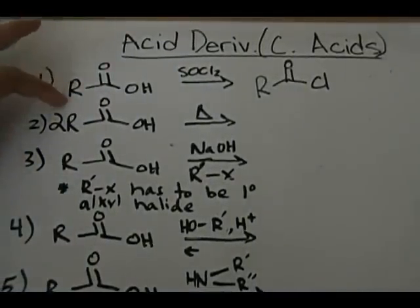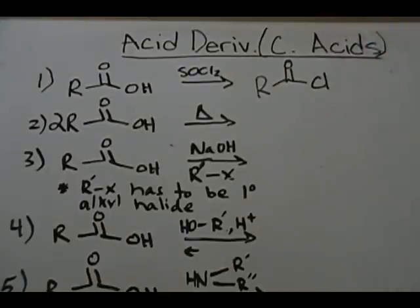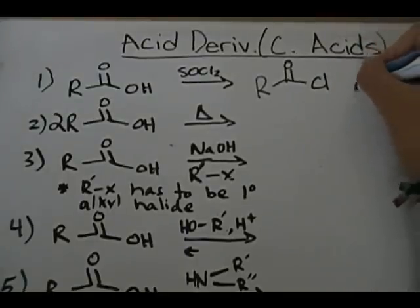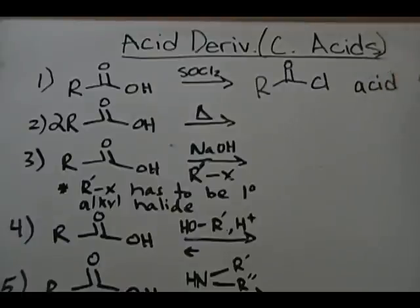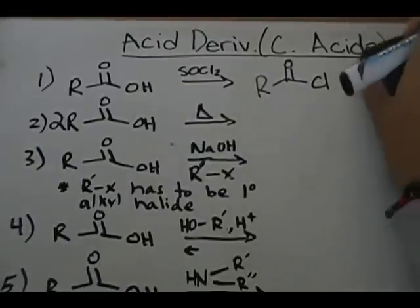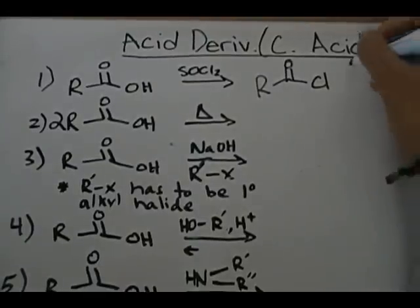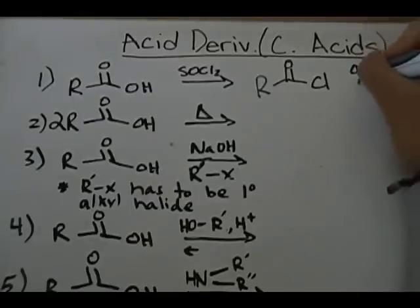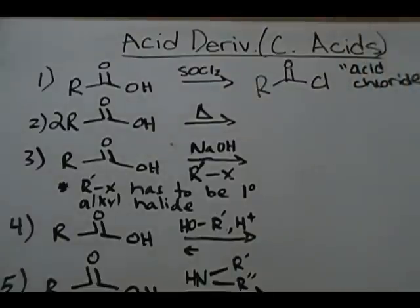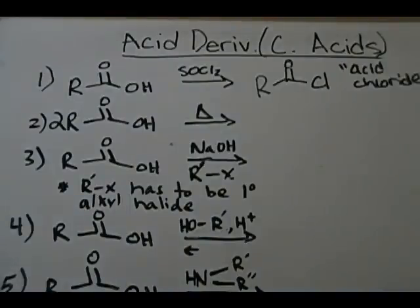So carboxylic acid with thionyl chloride gives you an acid halide — an acid chloride. All you have to do is replace the OH with the chlorine and you get your product. I could go through the reaction mechanism but I'd rather not — they all have a very similar trend.